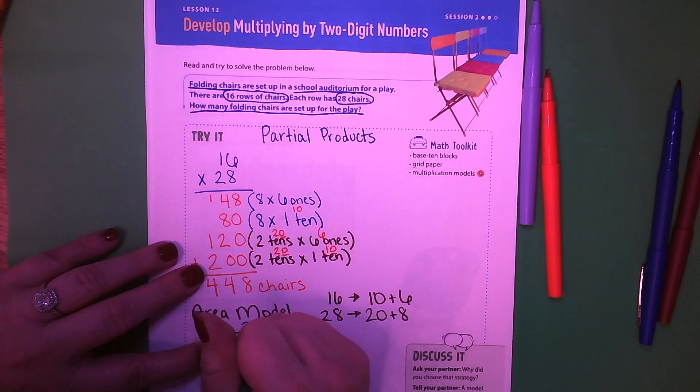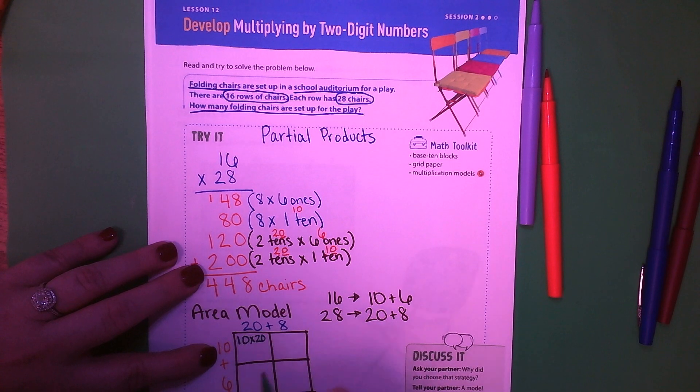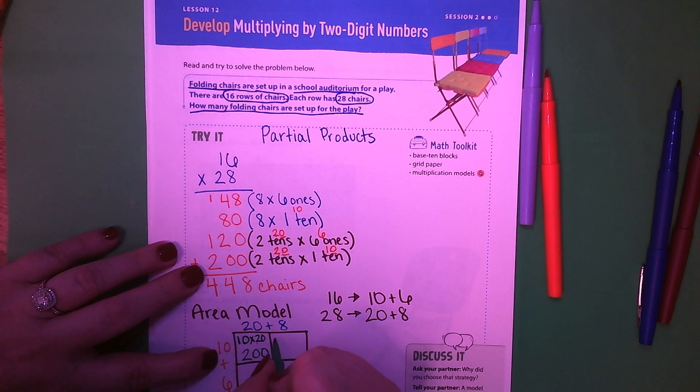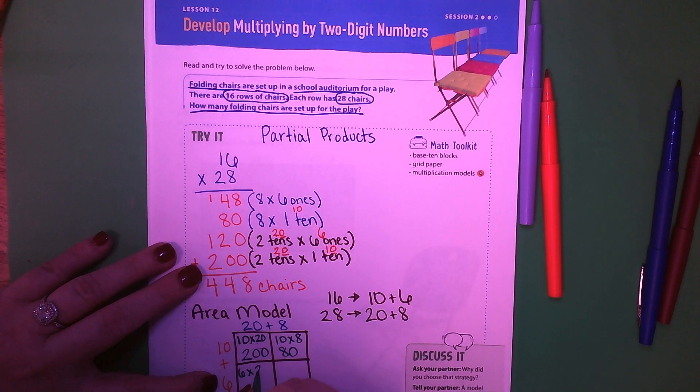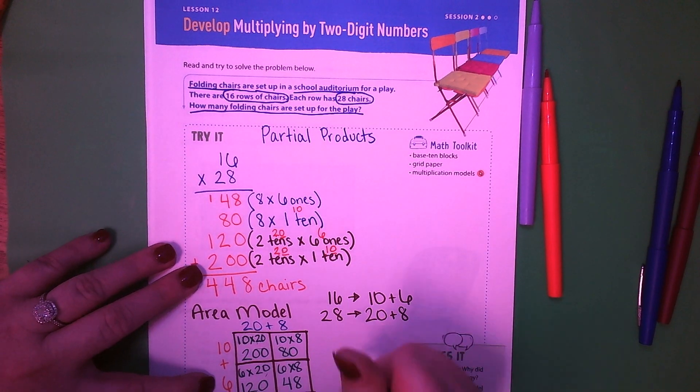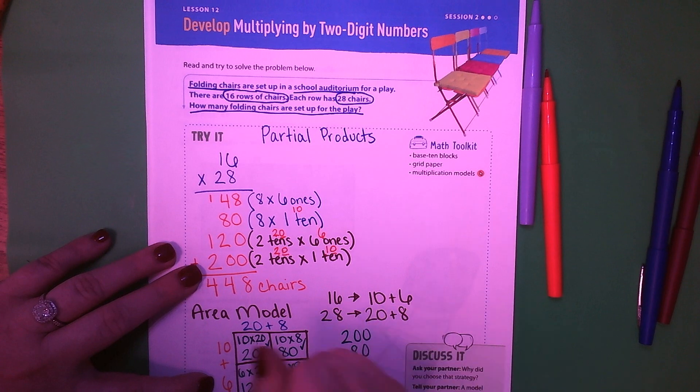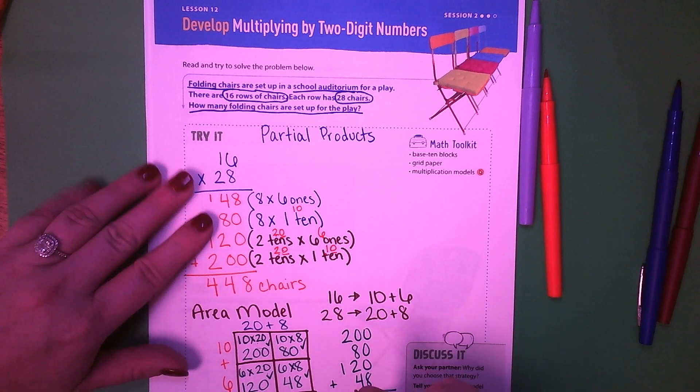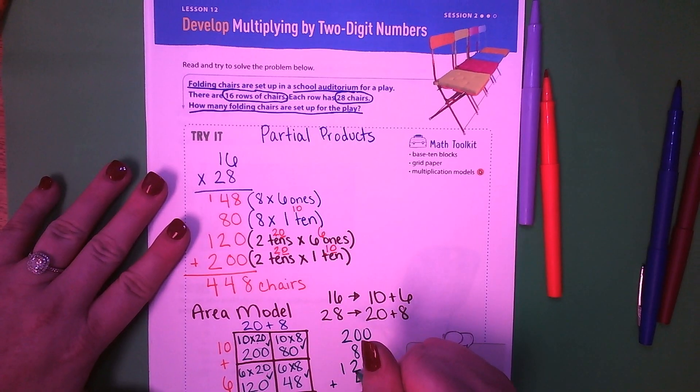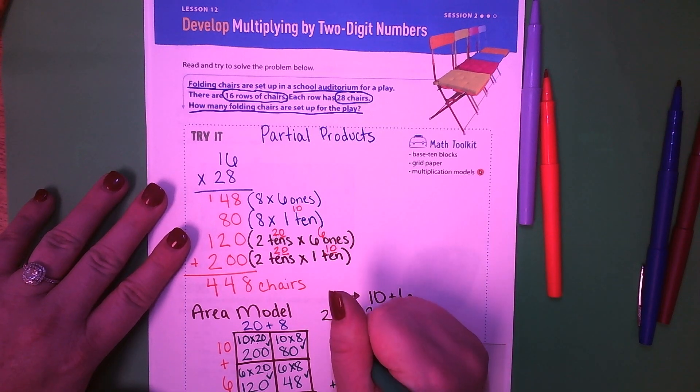So 10 times 20. 1 times 2 is 2 plus 2 zeros, which is 200. 10 times 8, which is 80. 6 times 20. 6 times 2 is 12 plus 1 more zero, which is 120. 6 times 8, which is 48. I'm going to add all those together. 200 plus 80 plus 120 plus 48.